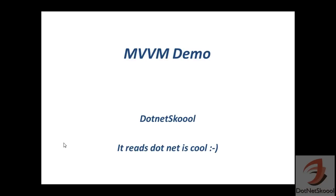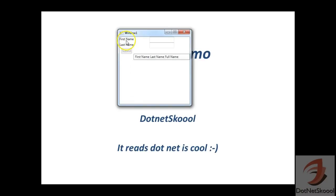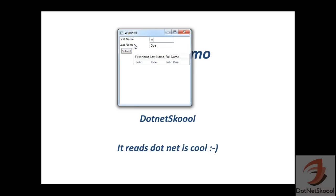Here is the application — it's very simple. It has a first name label, last name label, two text boxes, a submit button, and a list view. The submit button is not enabled by default. When I type a name like 'John' and lose focus, the button gets enabled. If I submit, it gets added to the list view. If I add 'Mary Watson', it gets added too. If I remove the input, the button gets disabled.